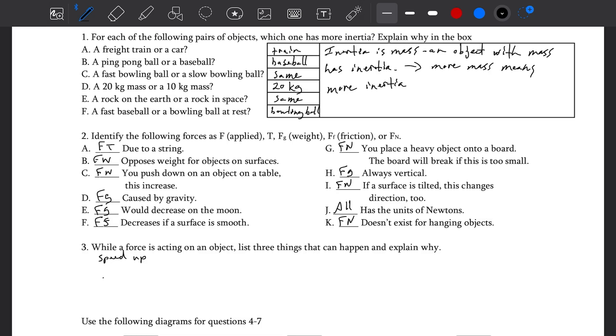While a force is acting on an object, list three things that can happen and explain why. If you apply a force, net force causes an acceleration. An acceleration is a change in velocity. If your velocity changes, you're either going to speed up, you're going to slow down, or you could change directions.